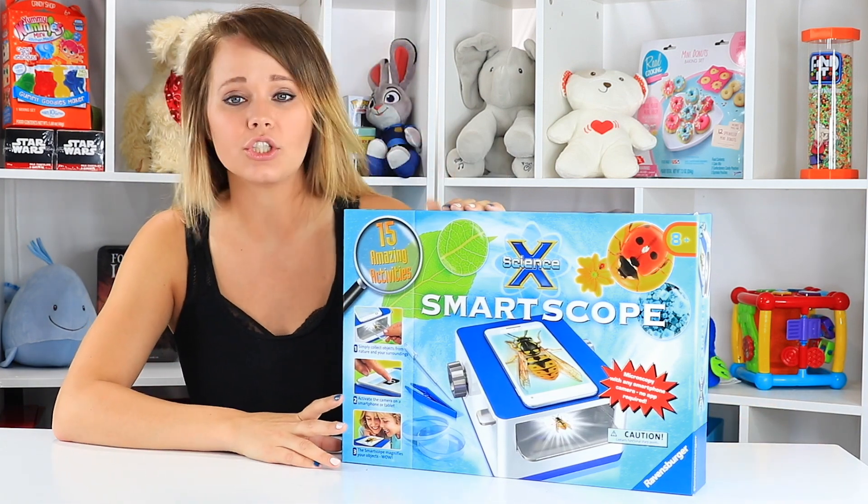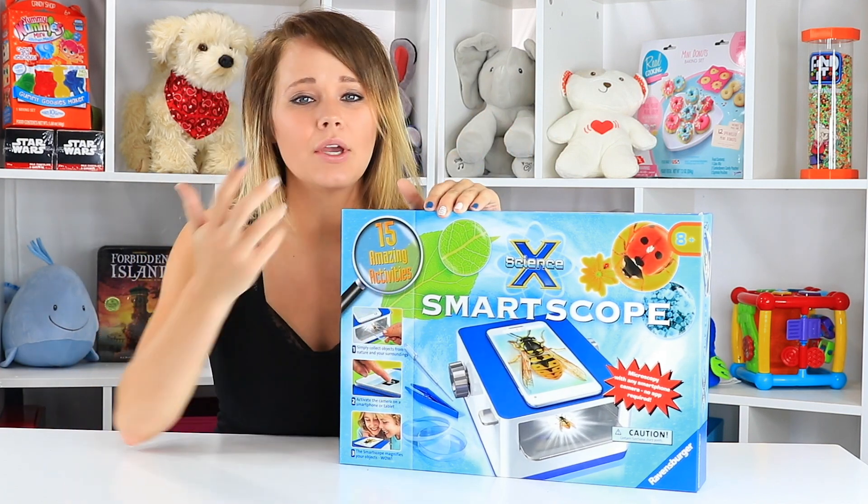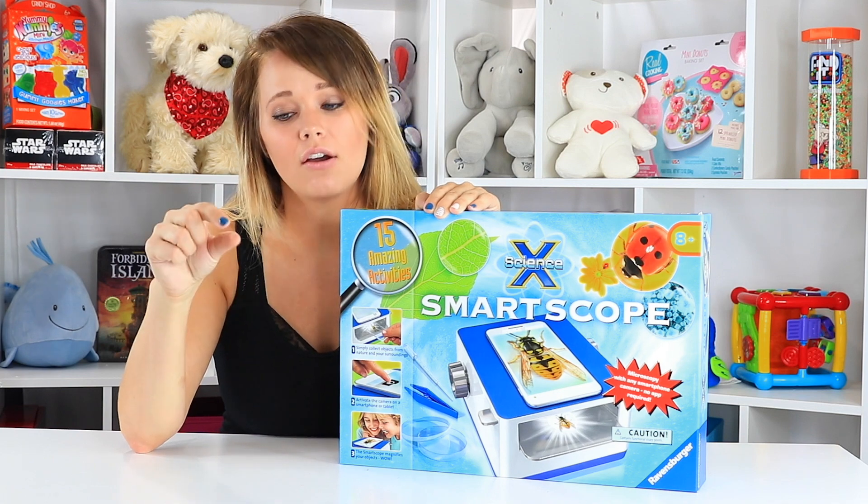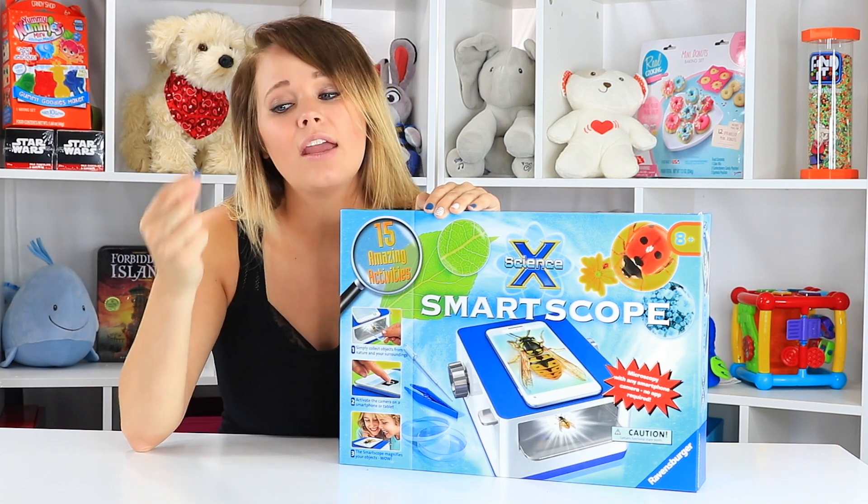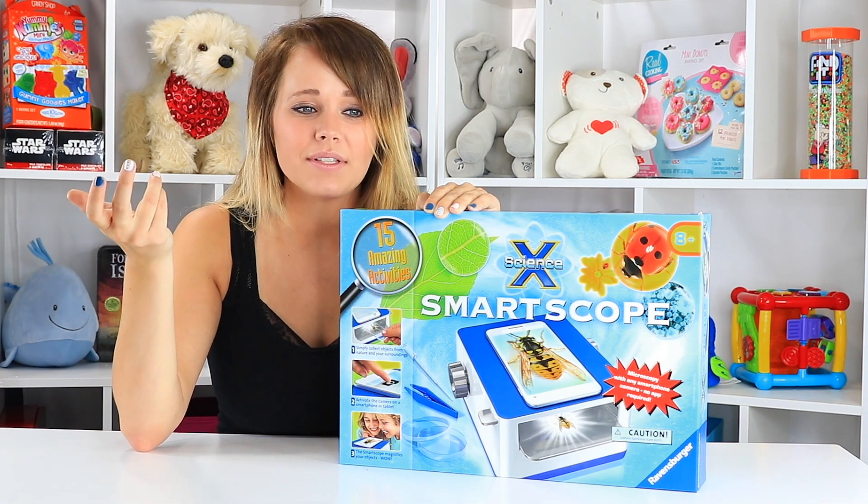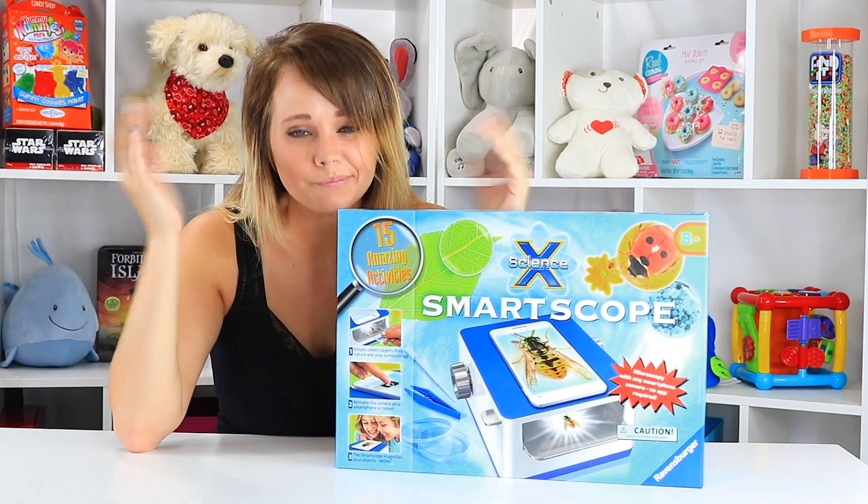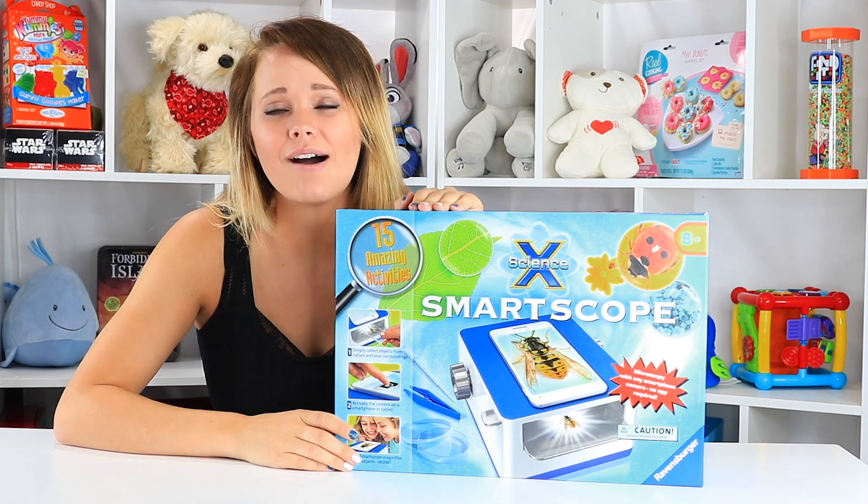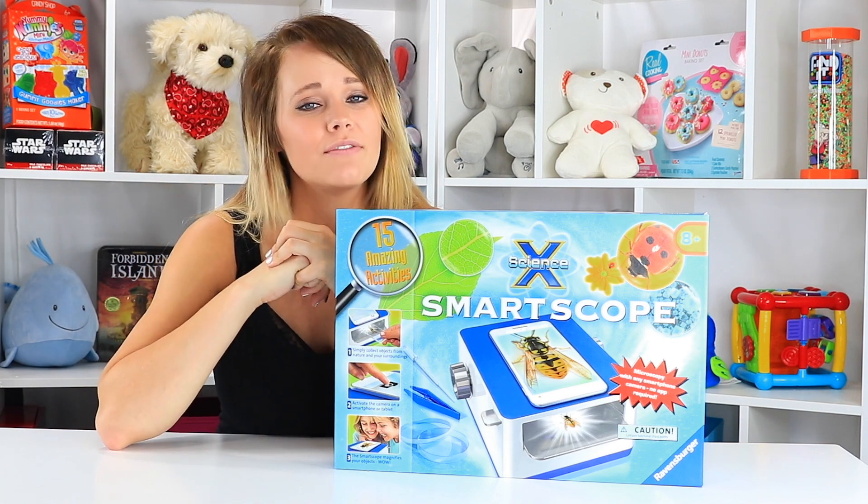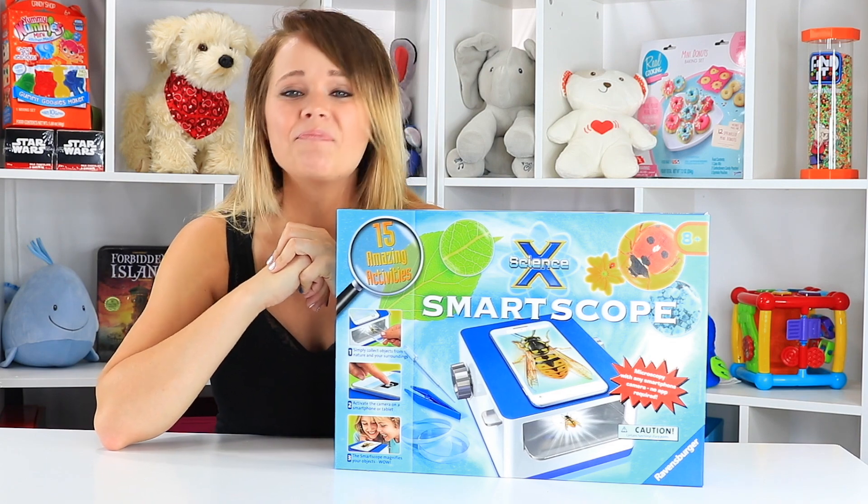Otherwise, I think Ravensburger did a good job. Again, this is for eight and older. The 15 amazing activities are really just suggestions where to find things and what things to look at like doing a drop of honey on a slide and letting ants be attracted to it, and then watching them eat the honey, that sort of thing. But it wasn't like amazing. It was kind of what you expect with a microscope. So guys, if you want to be here for more Toy Notes awesomeness, make sure you hit that subscribe button and give us a big thumbs up as it's always appreciated. Become part of the Toy Notes family by visiting at ToyNotes.com as well. Until next time. Bye!